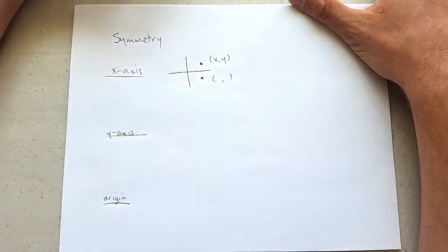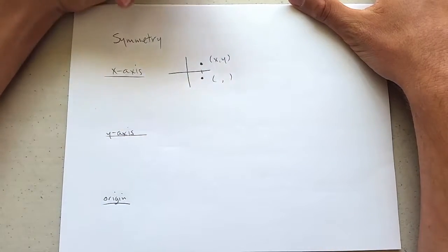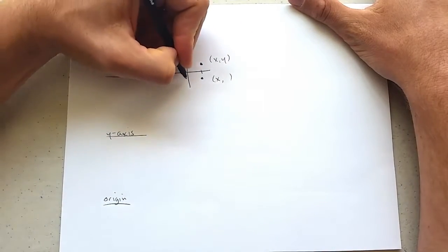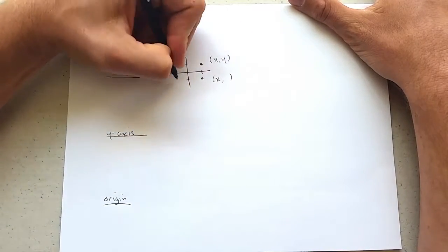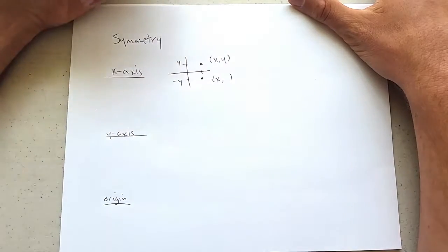What does this point have? Well, it definitely has the same x-coordinate. What happens to the y-coordinate when you flip across the x-axis? It becomes negative.